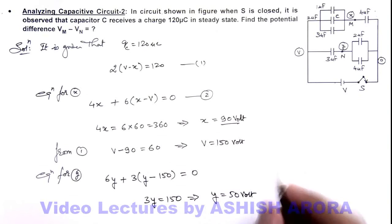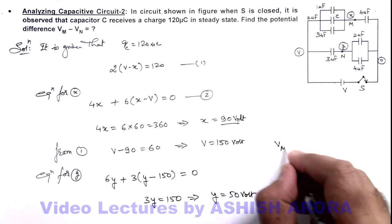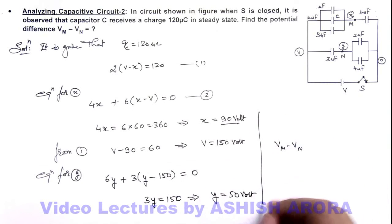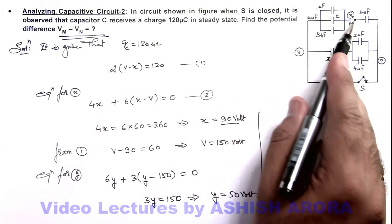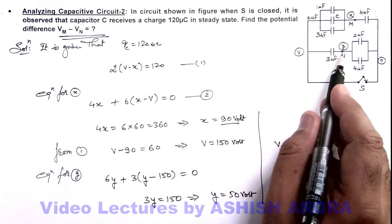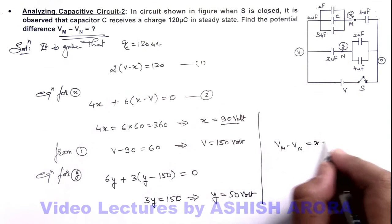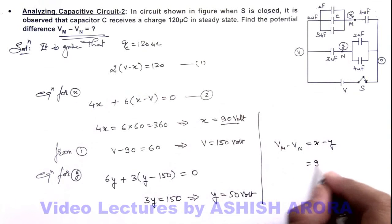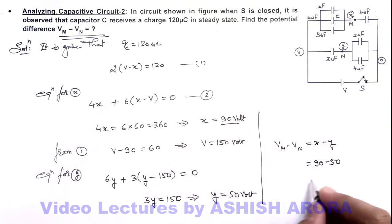Here we are required to find the value of Vm minus Vn. The potential at point M is x, at point N is y. So this is x minus y, which is 90 minus 50, that is equal to 40 volt. That will be the answer to this problem.